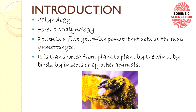Pollen can be defined as a fine yellowish color powder. As you can see in the picture, all over the bee is a fine yellow powder — that is pollen grain. Pollen grain is so tiny that when a group of pollen grains are together, they act like powder.